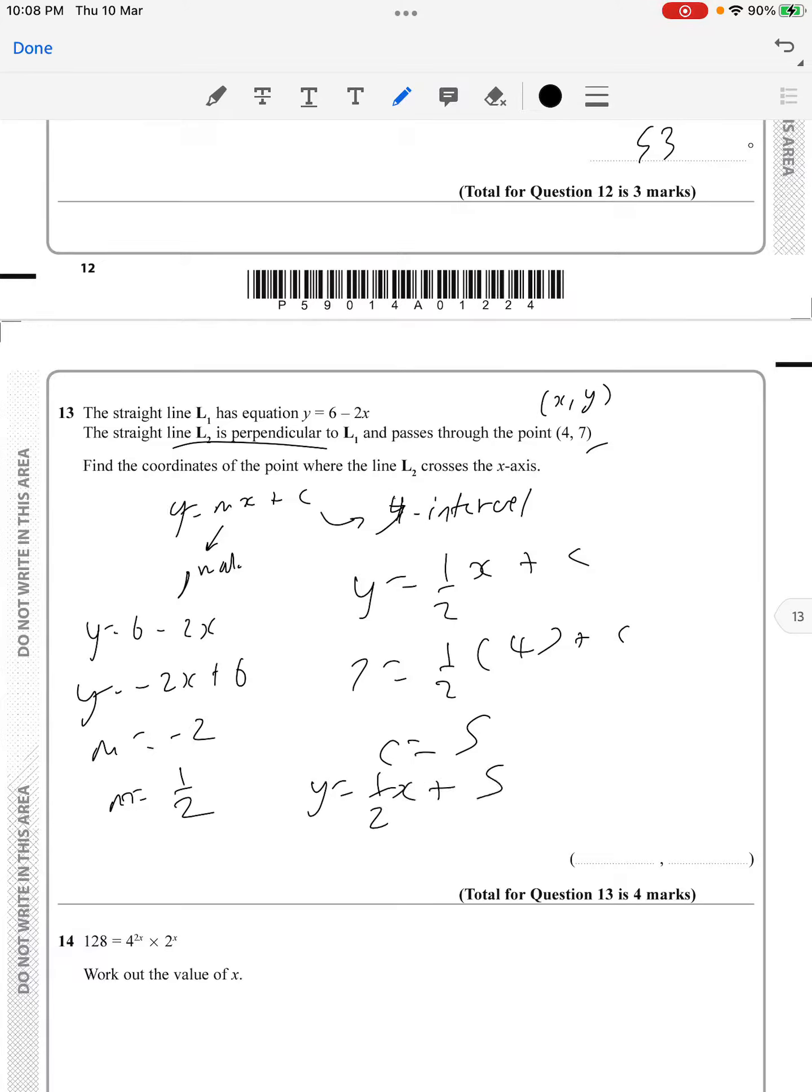your value as half x plus 5. Now they ask us to find the coordinates where it crosses the x-axis. We set y as zero. Once you put y as zero, you should be getting x equals minus 10.